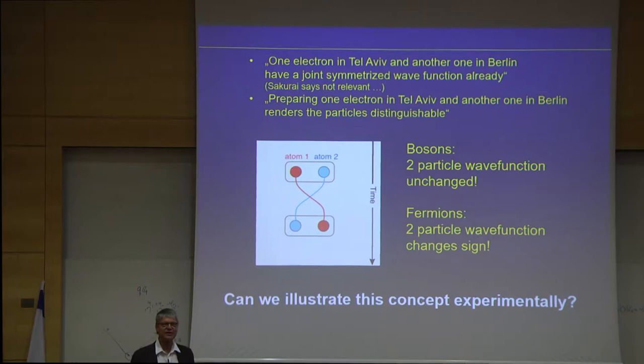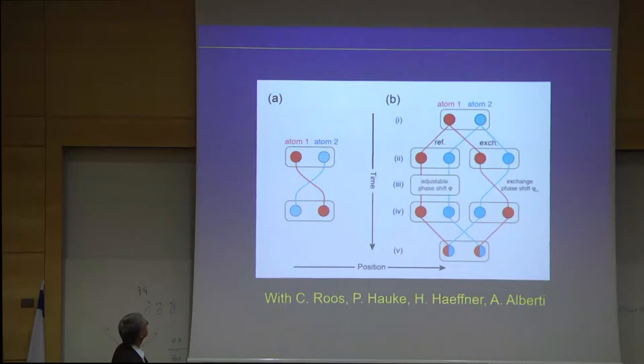Actually in my favorite quantum mechanics book by Sakurai, he says, this is rubbish. You don't have to think about it. There's no need to think about it in these terms. And on the other hand, I think as an experimentalist, I personally like an operational approach and view of what's going on. And so preparing one electron in Tel Aviv and another one in Berlin for me certainly renders these particles at least initially completely distinguishable. I don't have any problem in my mind with that. So this is the situation we want to test. So for bosons, you would expect that if we go for this quantum interference that the two-particle wave function would be unchanged. For fermions, it would change the sign.